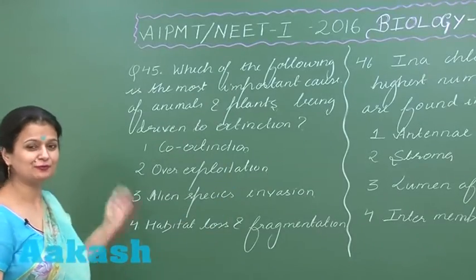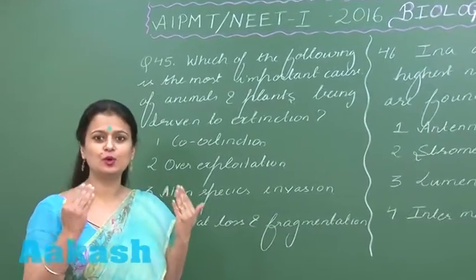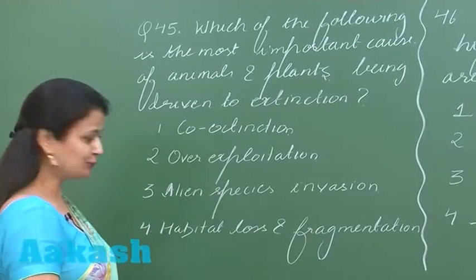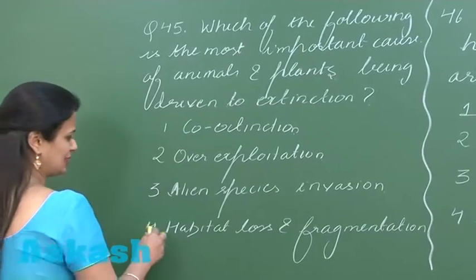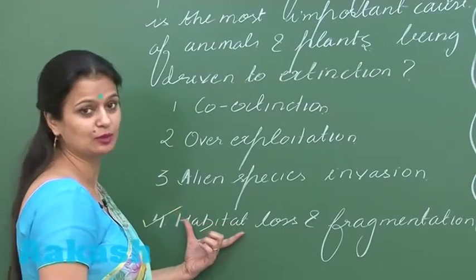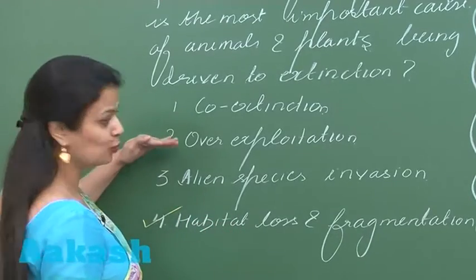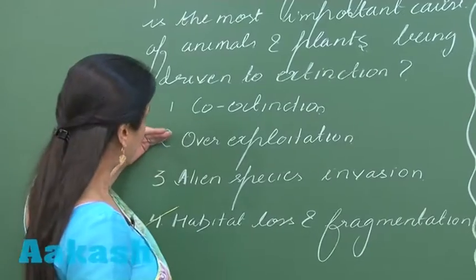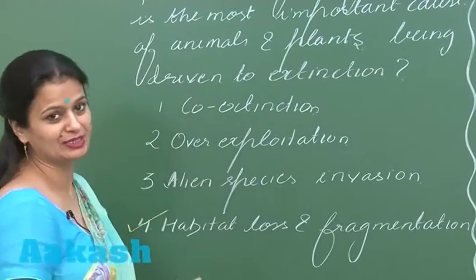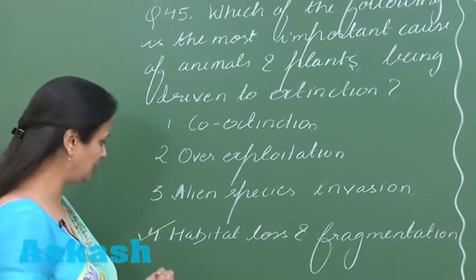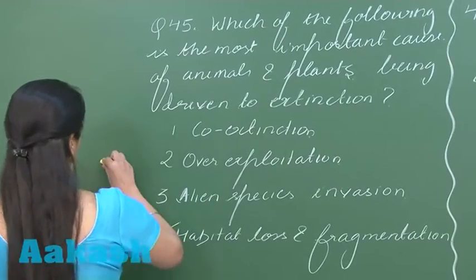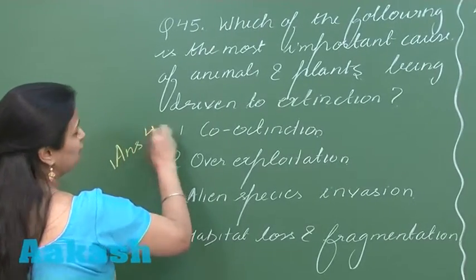In question number 45, we have to look for the main cause of extinction of plants and animals. The main causes are: first, habitat loss and fragmentation; second, over-exploitation; third, alien species invasion; and fourth, co-extinction. Out of these four, the main cause is habitat loss and fragmentation. So the right answer for this question is option number 4.